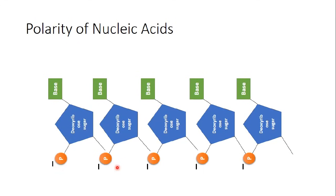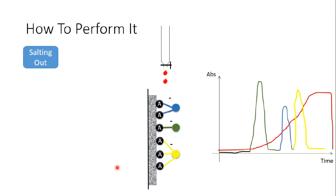Nucleic acids have different chain lengths. For example, a nucleic acid with one nucleotide will be eluted first, then one with two nucleotides, then three, and so on. So the salt gradient method can also be used to elute proteins or nucleic acids from the column.